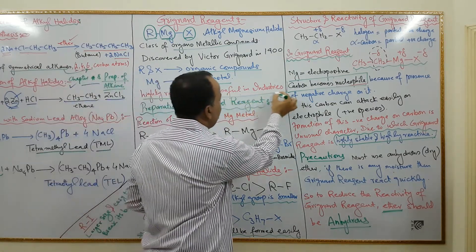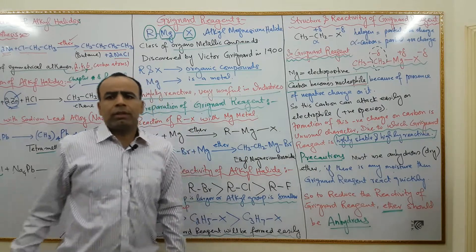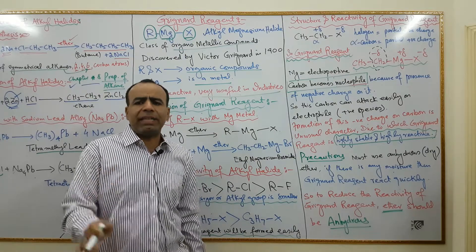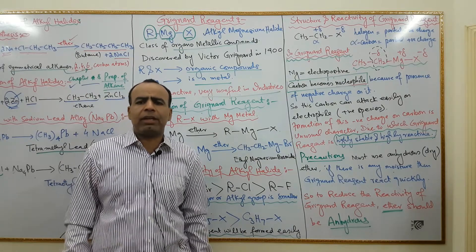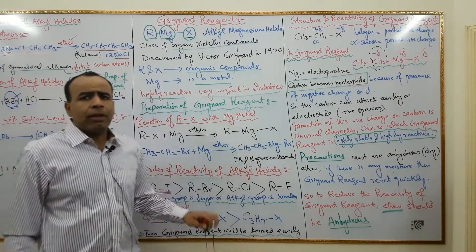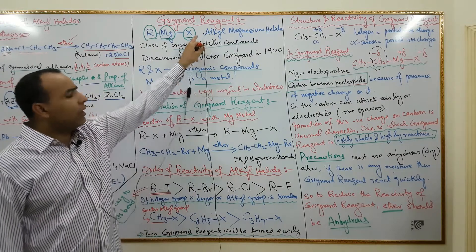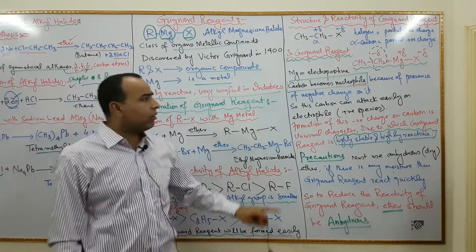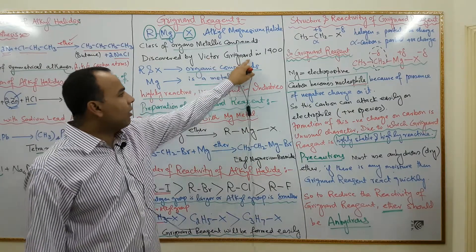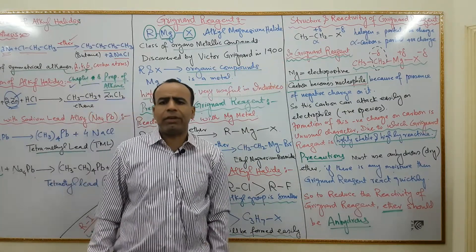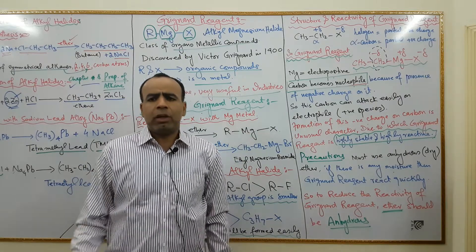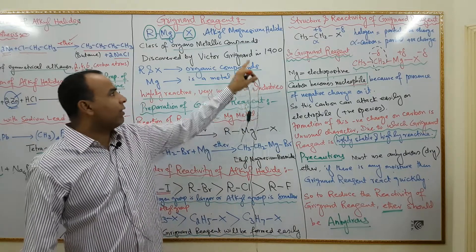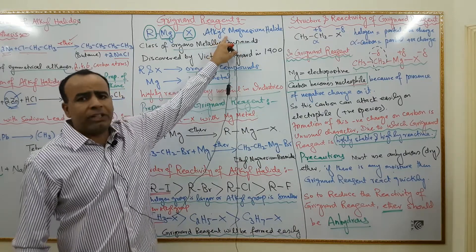Grignard reagent is highly reactive and very useful for industries. We can prepare all classes of organic compounds by using Grignard reagent. Grignard reagent was discovered by Victor Grignard in 1900, and he was awarded the Nobel Prize in Chemistry for his discovery.